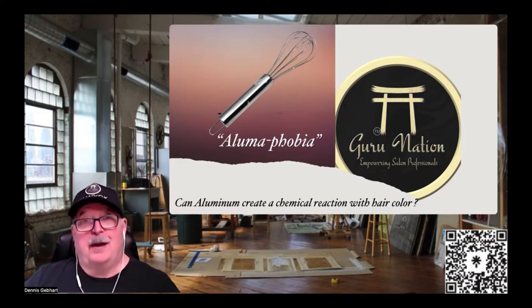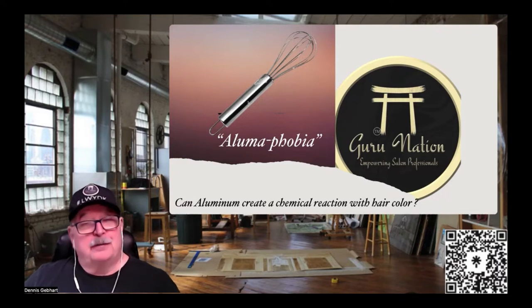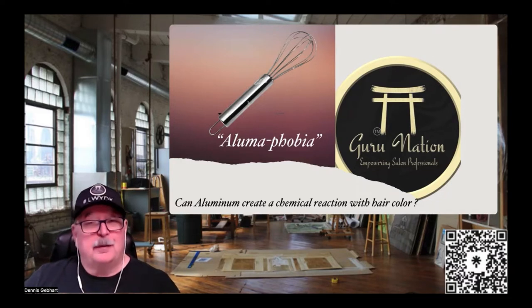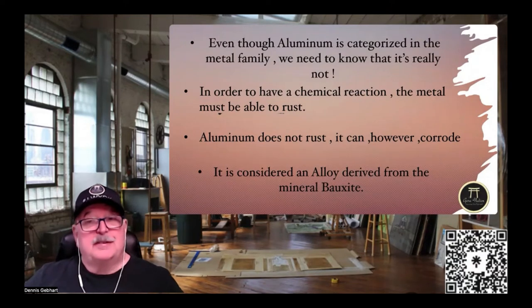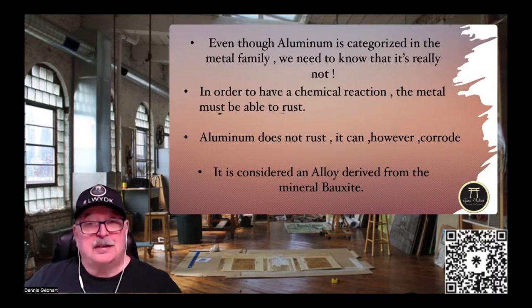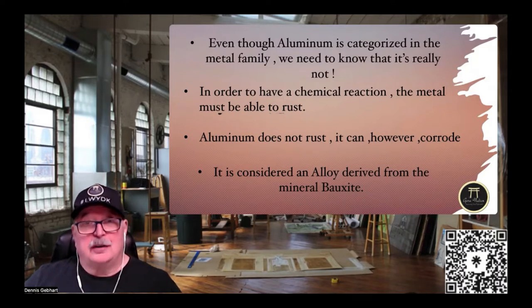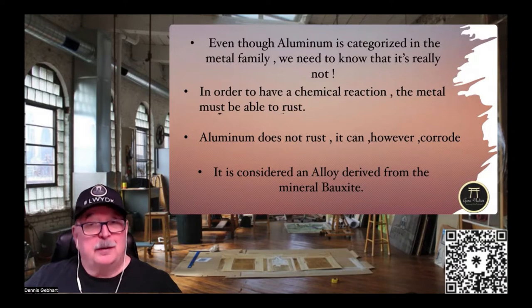I know you use aluminum when you do foils, and many people say it's no big deal and don't even question it — but some do. So let's go to school and talk about aluminum itself. Even though aluminum is categorized in the metal family, it's important to know it's not actually a metal — it's considered what they call an alloy. In order for a chemical reaction to occur between metals and the chemicals we use, the metal must be able to rust. Aluminum does not rust; it will corrode, but it doesn't rust.